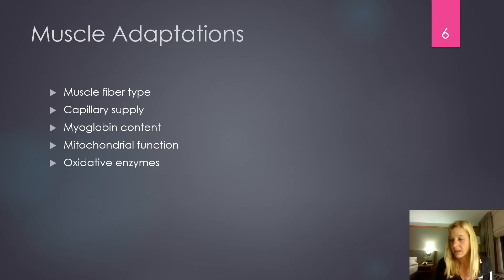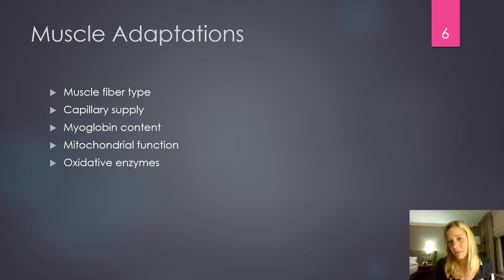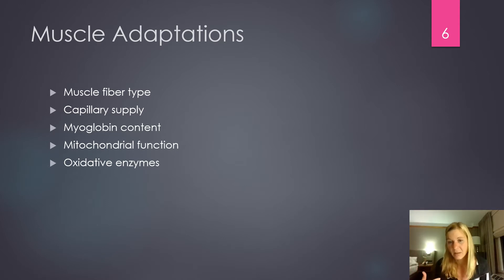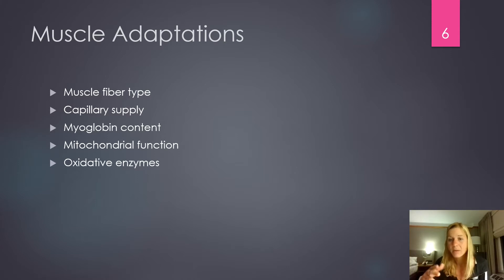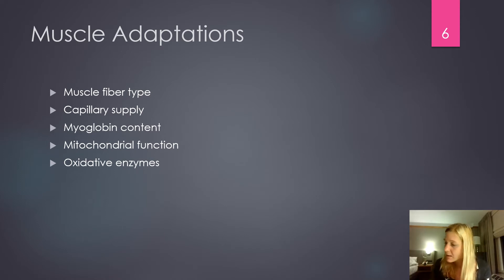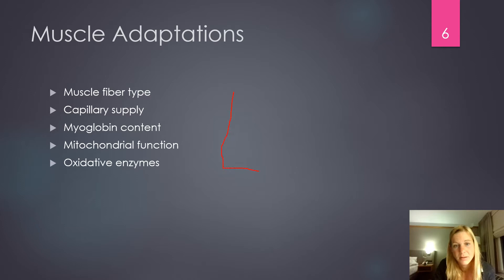Capillary supply will increase the number of capillaries to the active muscle, and this will be very specific to the muscle you regularly activate. For example, a swimmer might see an increase in capillary density in the back muscles because those are important for swimming, but less change to the leg muscles if they're not a big kicker.